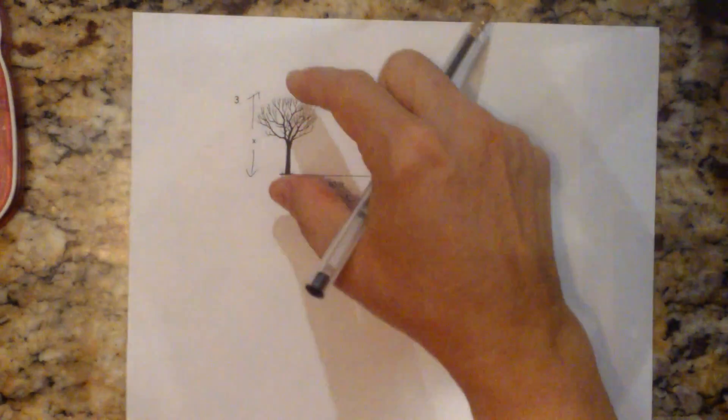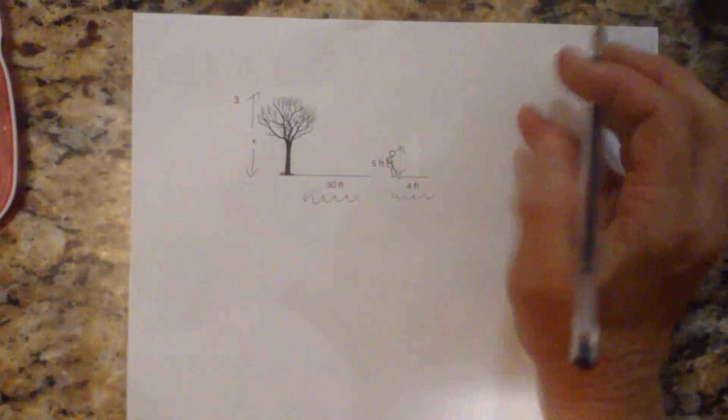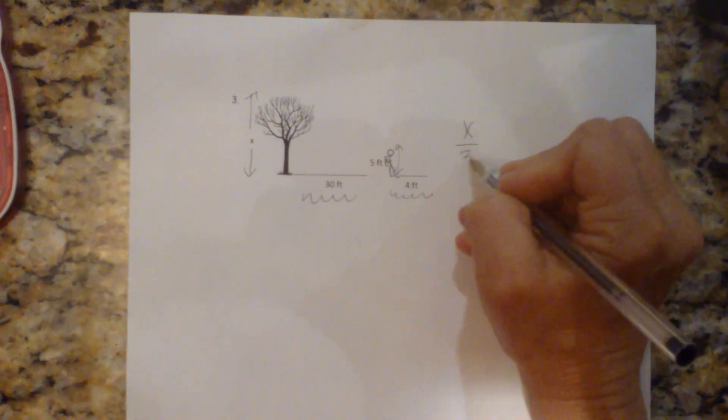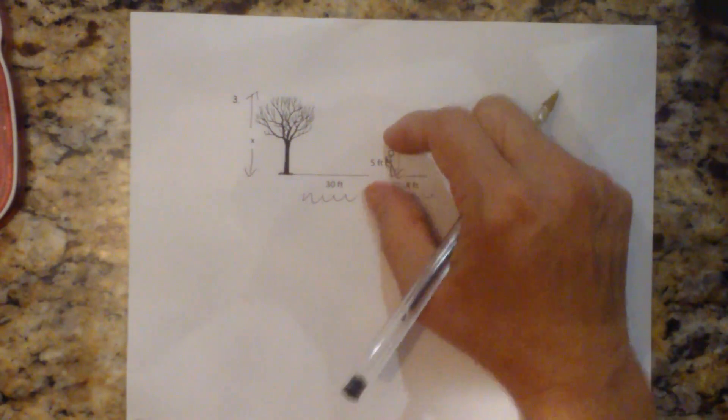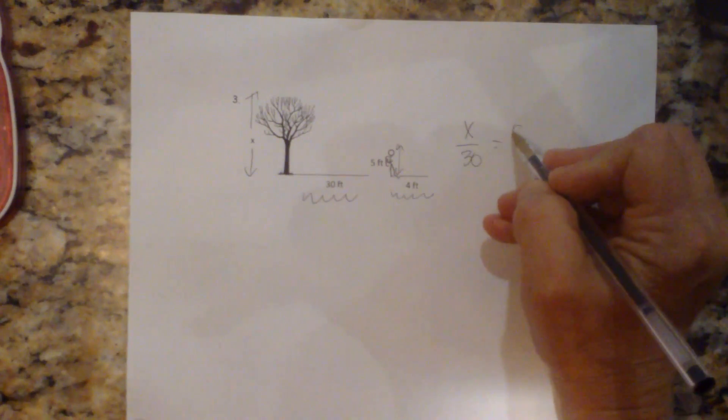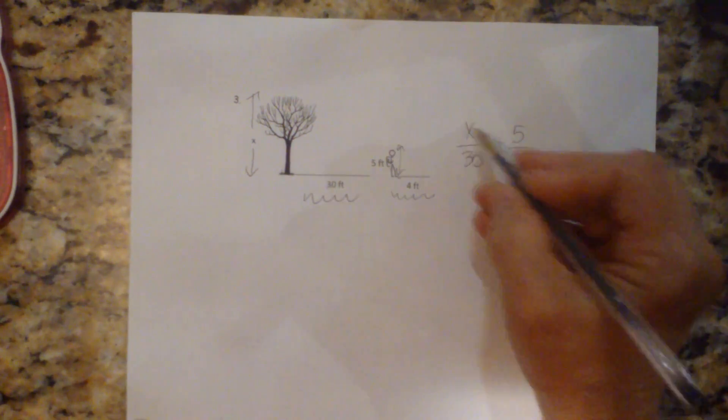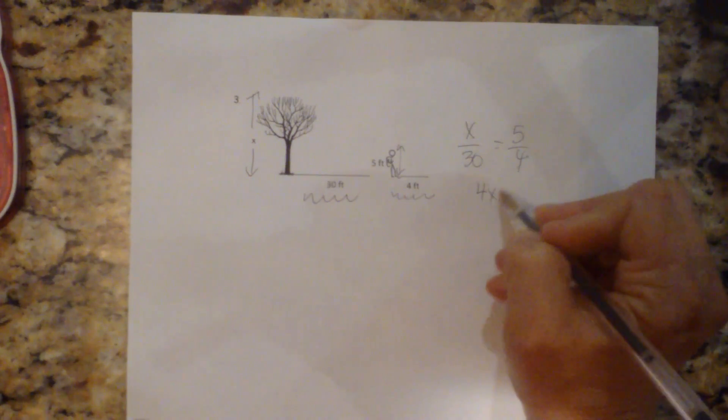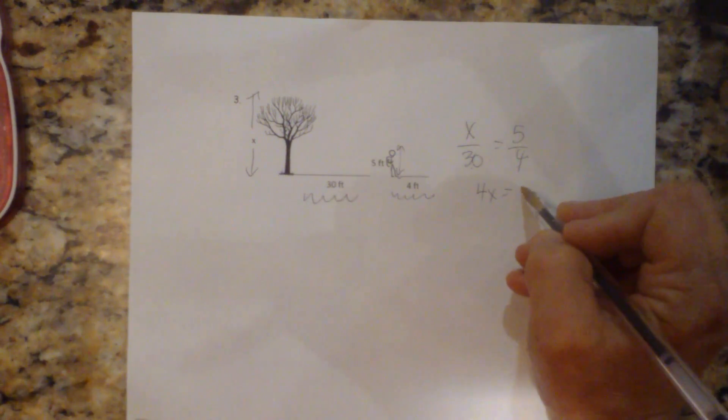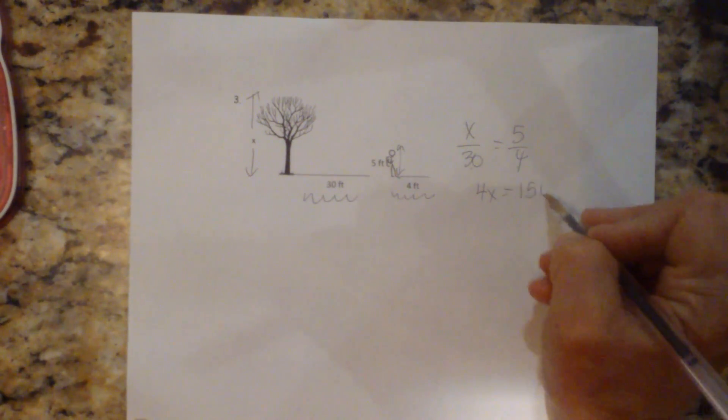So let's set up a proportion. Height is to shadow. So x is to 30. As height is to shadow. So 5 feet is to 4. Let's perform our cross product. 4 times x is 4x. 30 times 5 is 150.